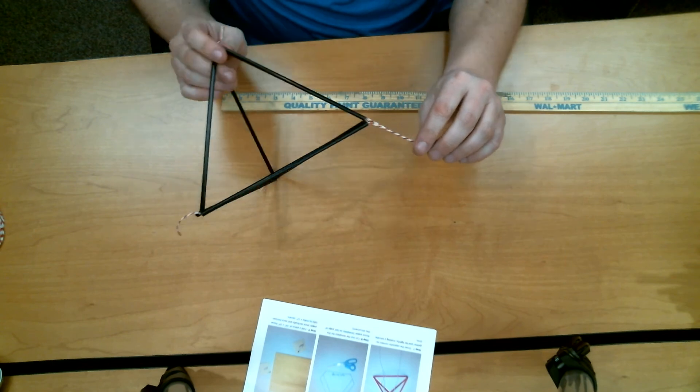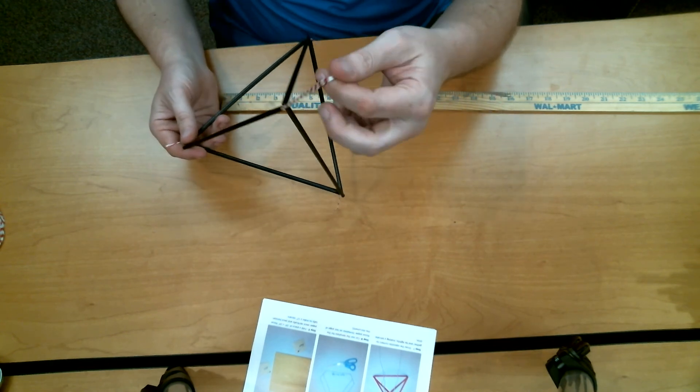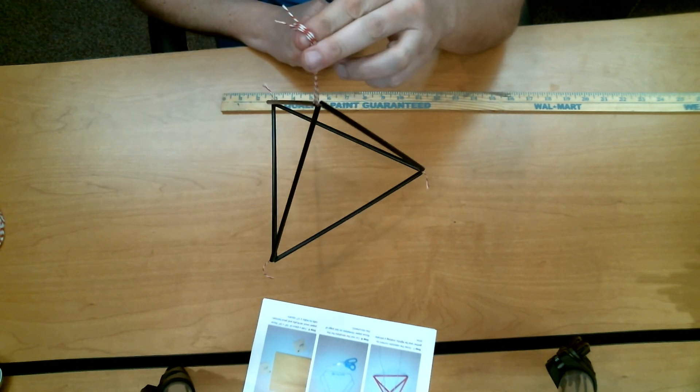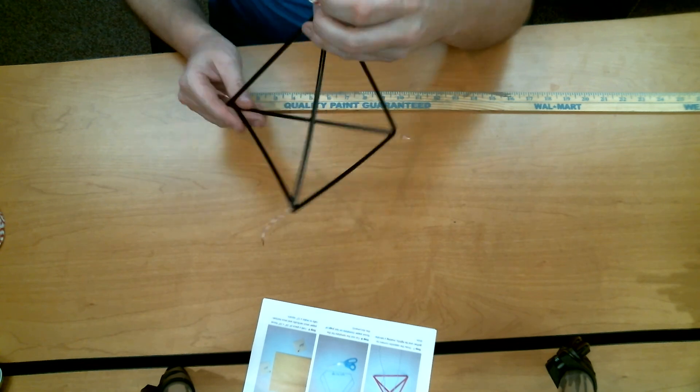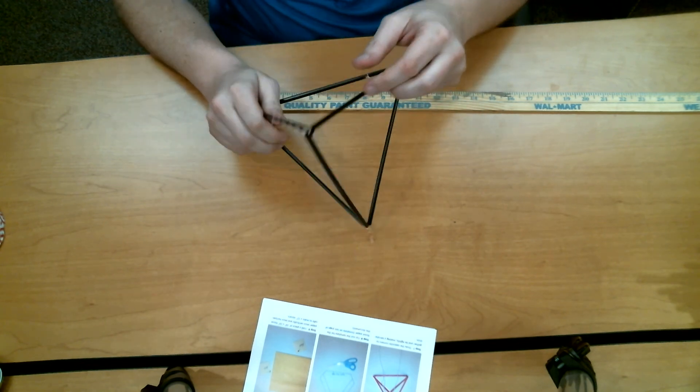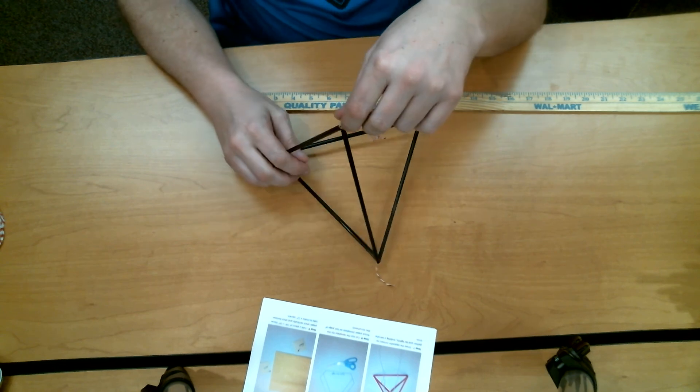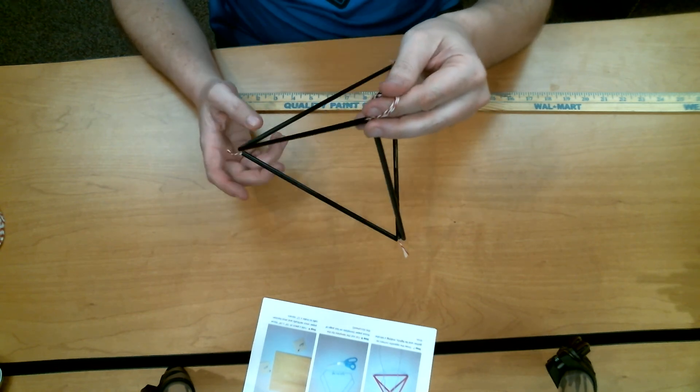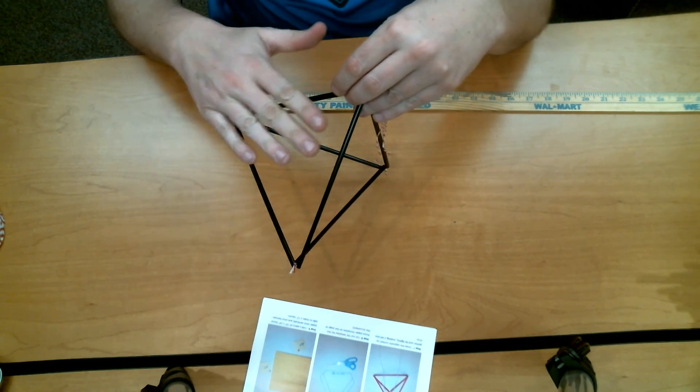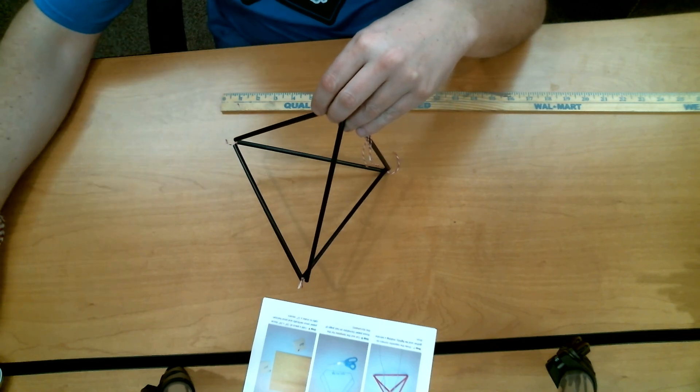If you did it right, all of the string tails should be coming out of the point of the tetrahedron kite. You can hold it by that and let it hang. The other corners might have a short tail on them. That's not going to affect anything right now. Alright, in video number two we're going to cut out our tissue paper and we're going to wrap the kite. Thank you.